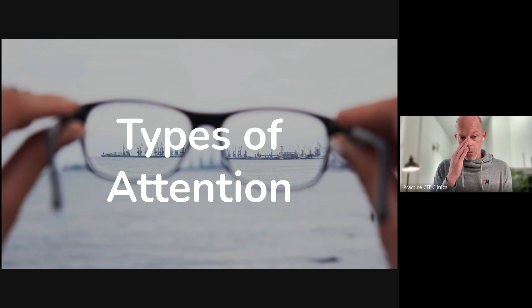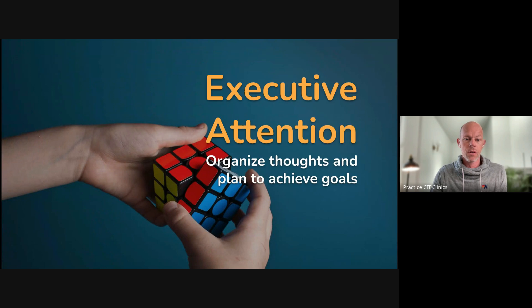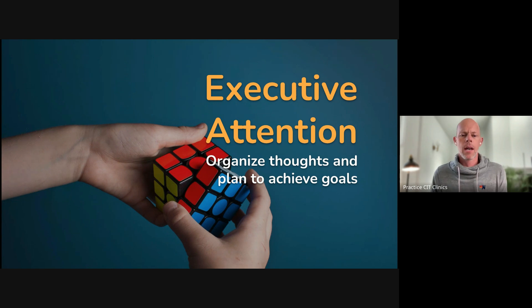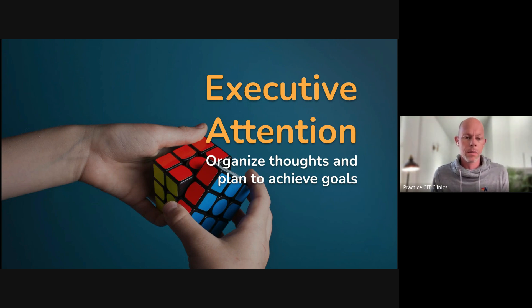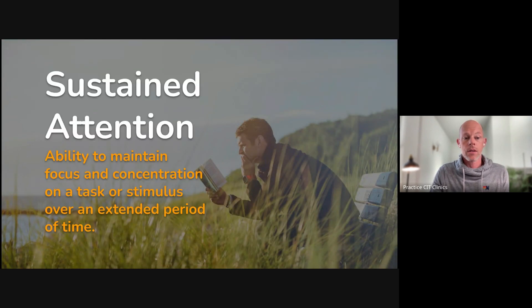So what exactly does that mean? There are different types of attention and today we'll practice a few different versions of them. There's this thing called executive attention — when we sit down and say 'I'm going to organize my thoughts and plan something out,' trying to get somewhere or do something specific, using executive attention to focus and organize our thoughts.